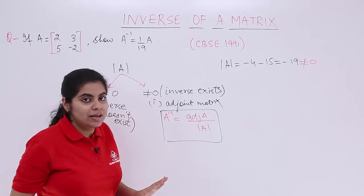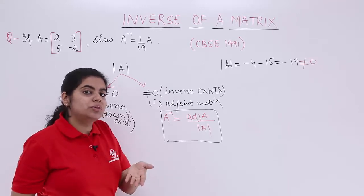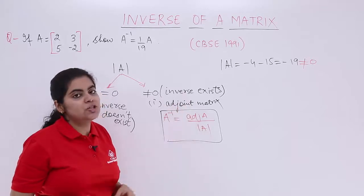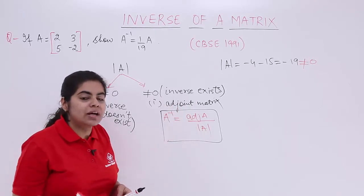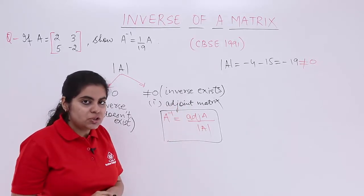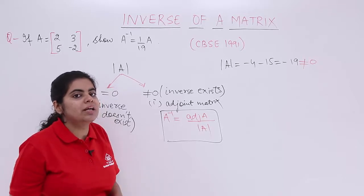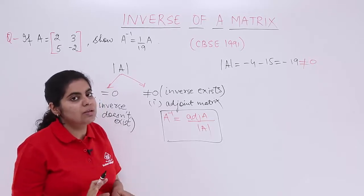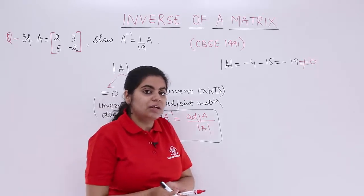I cannot stop the question there and then. I can move to the other step, and that other step is finding the adjoint. Now how to find out the adjoint? For adjoint, you need to first find out the co-factors of the matrix.